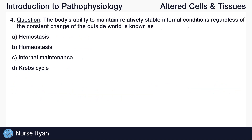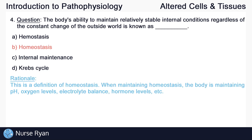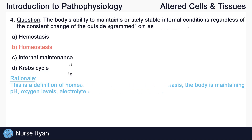Question number 4: the body's ability to maintain relatively stable internal conditions regardless of the constant change of the outside world is known as? The answer here is B — homeostasis. This is one of the definitions of homeostasis. When maintaining homeostasis, the body is maintaining pH, oxygen levels, electrolyte balance, hormone levels, and more.